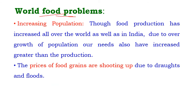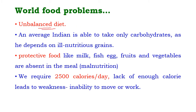The first world food problem is increasing population. Though food production has increased all over the world as well as in India, due to overgrowth of population our needs have increased greater than production. The prices of food grains are also shooting up due to droughts and floods in the country.